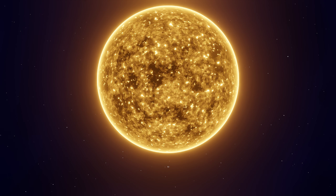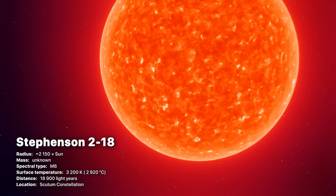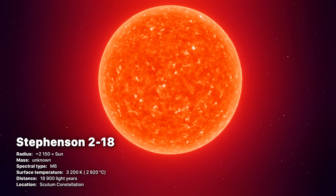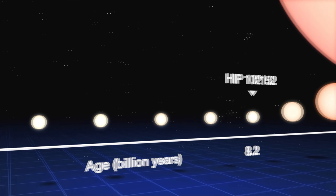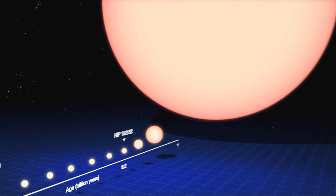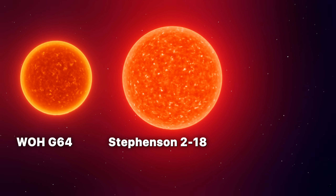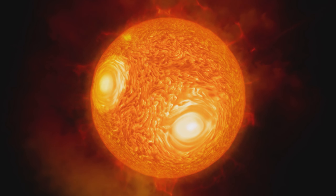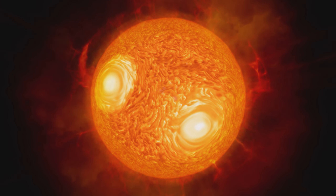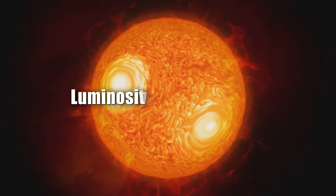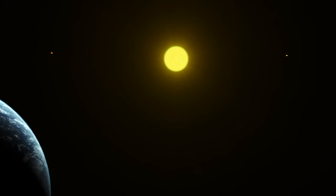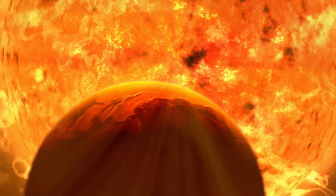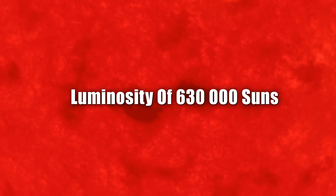Its size of 2150 solar radii could possibly be an overestimation due to the calculation method used, and the fact that the limit for star size predicted by stellar evolutionary theory is estimated to be only roughly one and a half thousand solar radii. Luminosity estimates for the star are uncertain as well — the first calculation gave it a relatively modest luminosity of 90,000 suns, while the latest one gave the star a very high luminosity of nearly 630,000 suns.